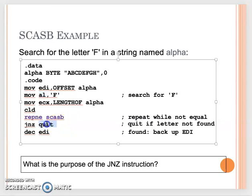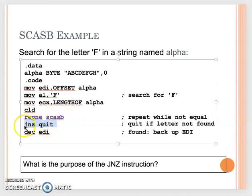So here we need to use jump-not-Z. When I leave the repeat, I'm not really finding the match — I didn't find the match but ECX became zero, so I have to finish. So if the zero flag is not set, I just quit and print that I cannot find the target letter 'F'.